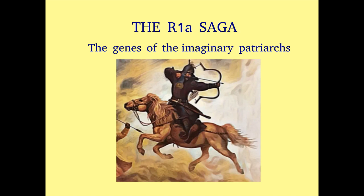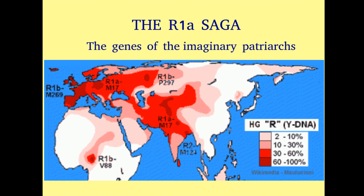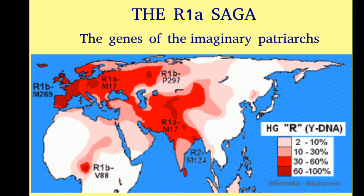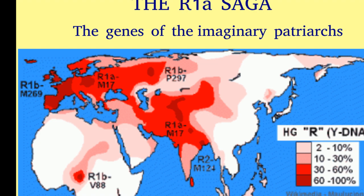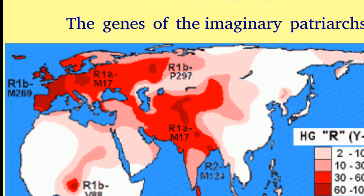Next we come to the R1 saga, one of the most long drawn out and dramatic stories imagined for Indians by geneticists. All men have what is called a Y chromosome and a small part of this chromosome contains a subset called R1. When it was discovered that R1 was found all the way from Western Europe through Eastern Europe, Russia, Central Asia, and India, there was great rejoicing that the ultimate Aryan gene had been found.